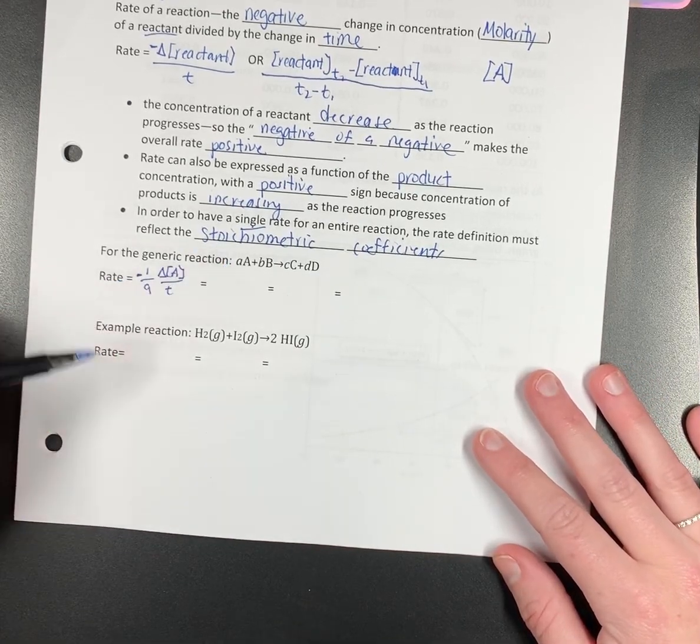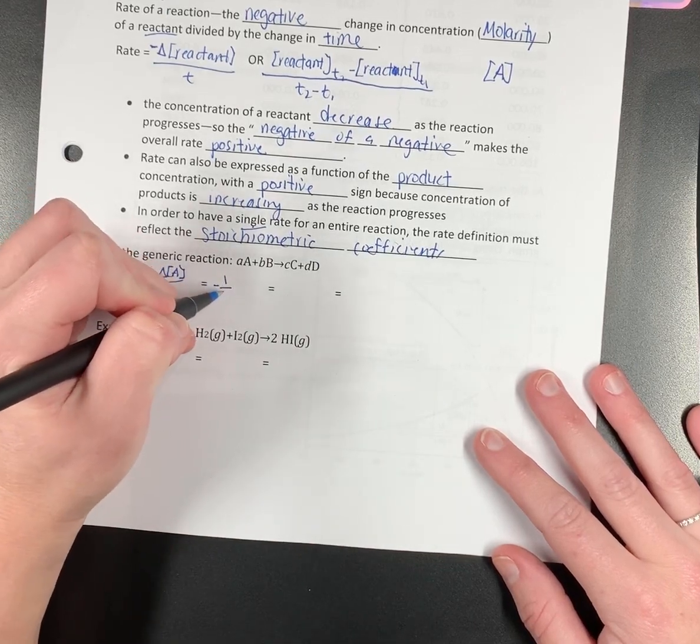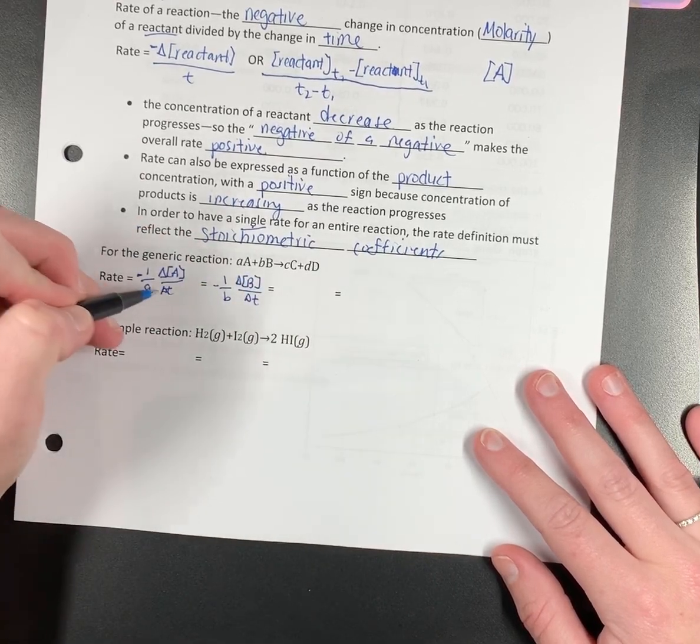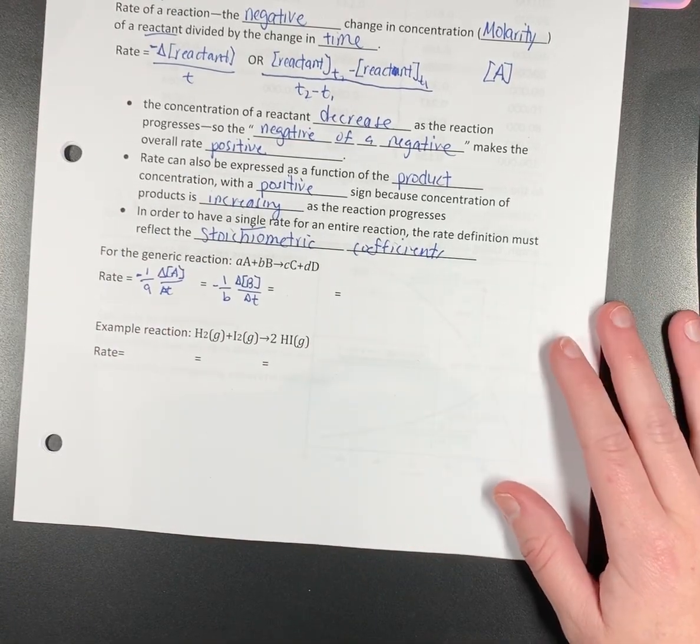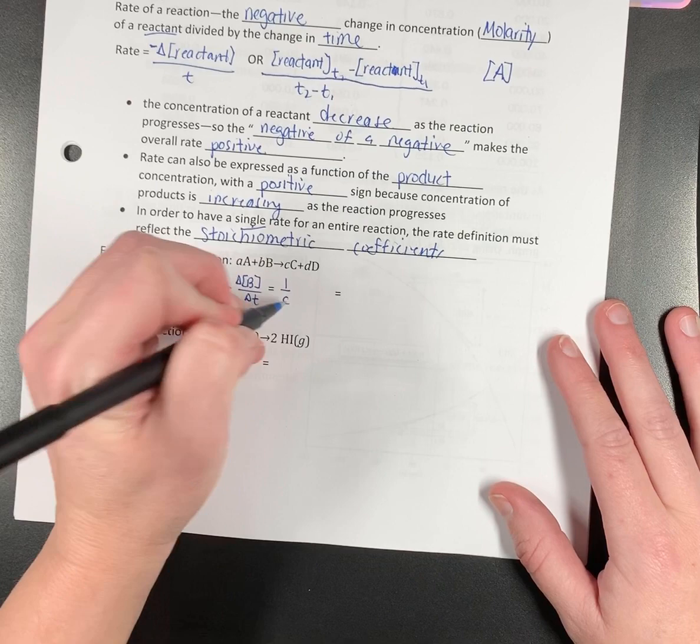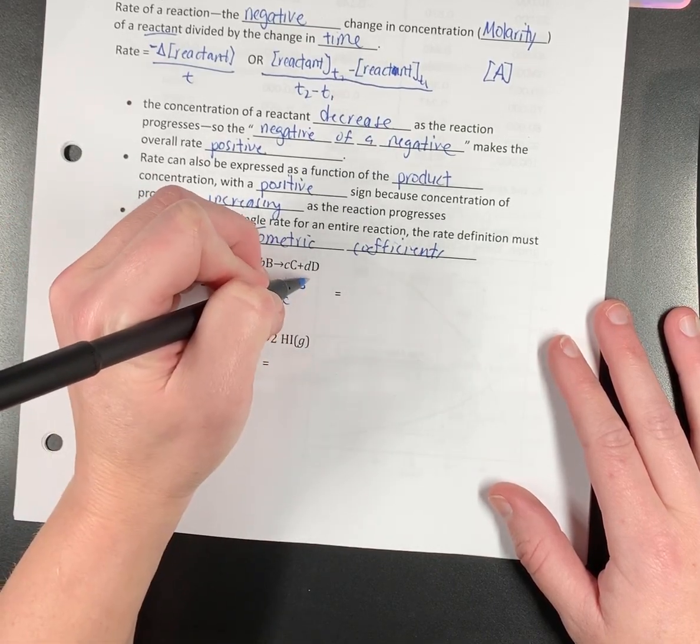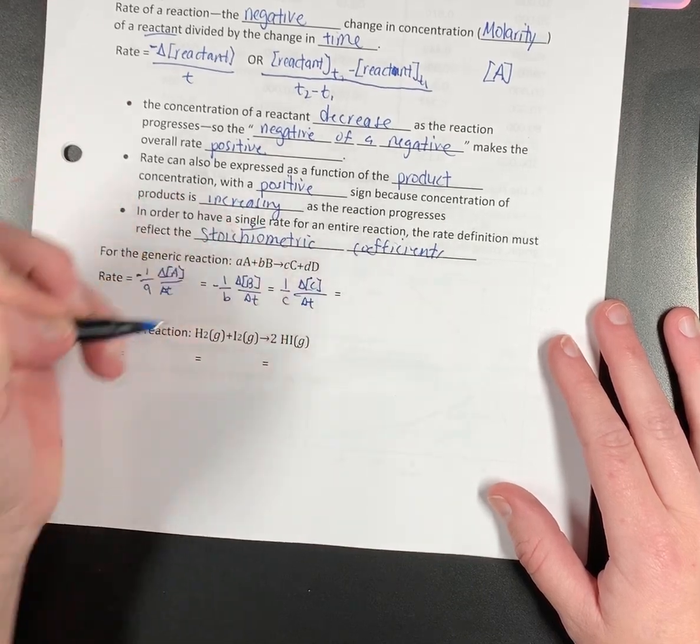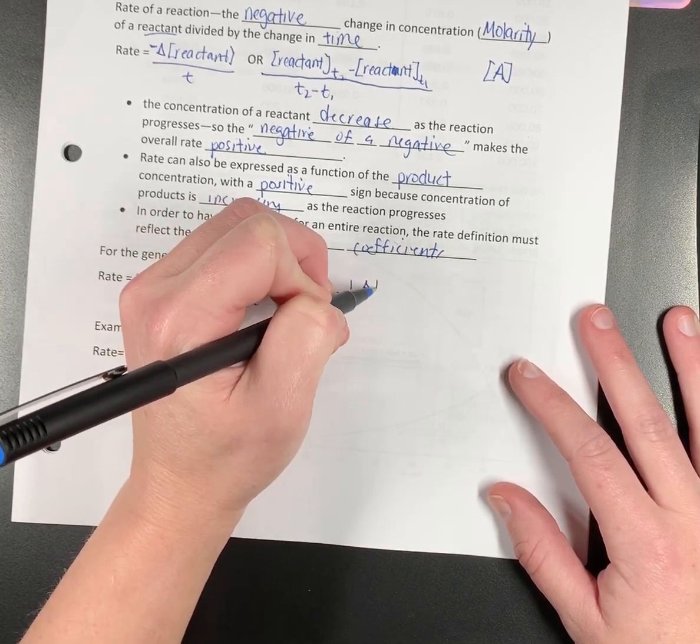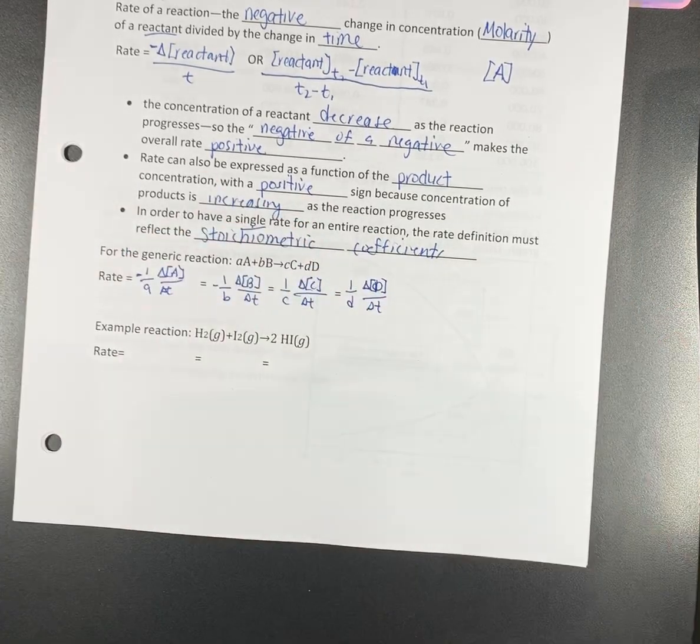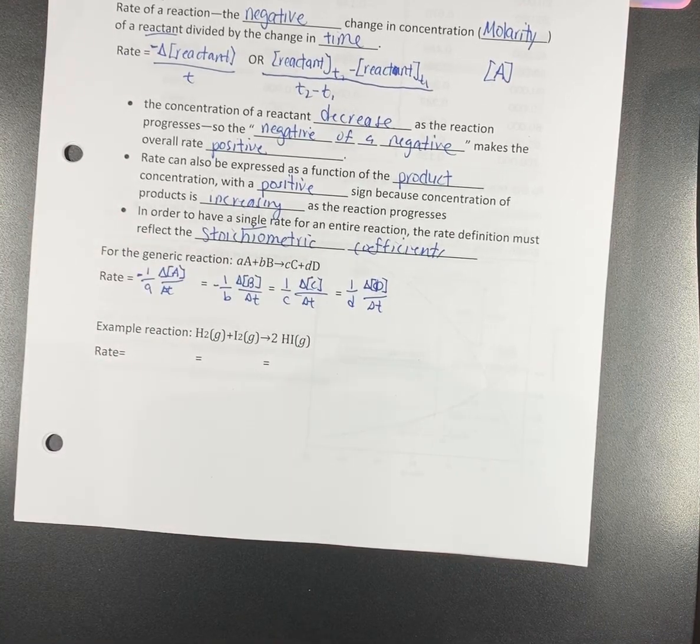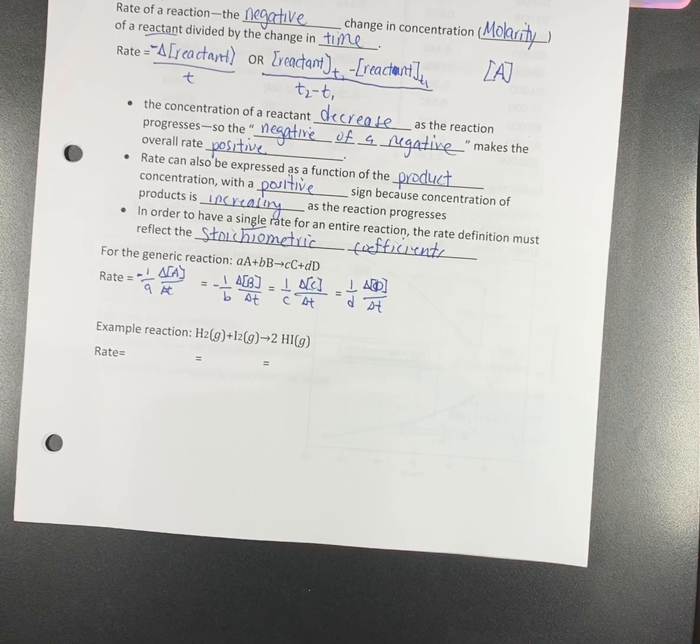So it's negative because A is a reactant. Same thing for B: negative one over b, change in concentration of B over change in time. What happens to the sign when we get to the product? It's positive. So one over little c, change in concentration of c, change in time. Other product little d, delta d delta t. If you run the math, all of these should come out to the same number. They may vary a little bit depending on how you round, but you will get the same answer.